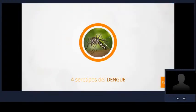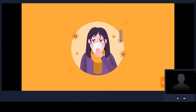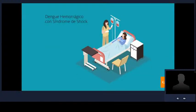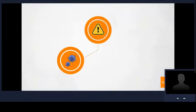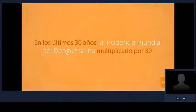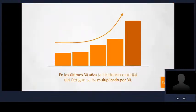Existen cuatro serotipos diferentes del virus del dengue: dengue 1, dengue 2, dengue 3 y dengue 4. Los cuatro producen la misma enfermedad, que puede presentarse como una fiebre indiferenciada hasta una forma grave conocida como dengue hemorrágico con síndrome de shock. La severidad puede asociarse a reinfecciones o al serotipo infectante. En los últimos 30 años, la incidencia mundial del dengue se ha multiplicado por 30 y muchos países están notificando sus primeros brotes.